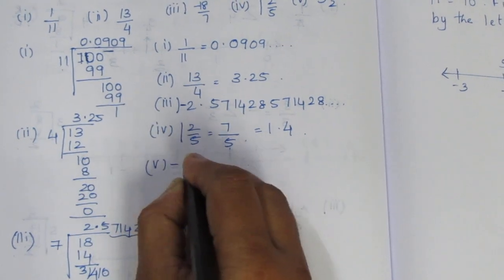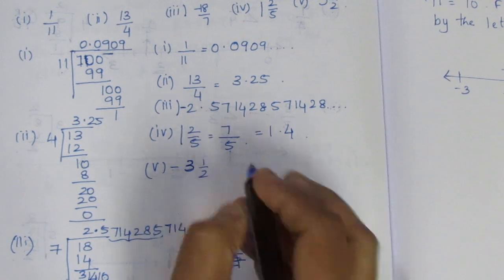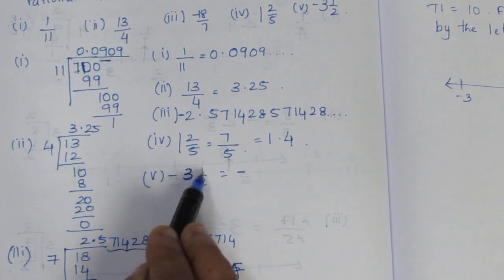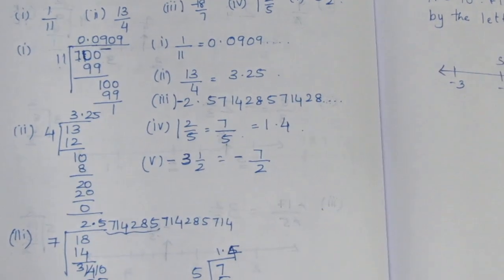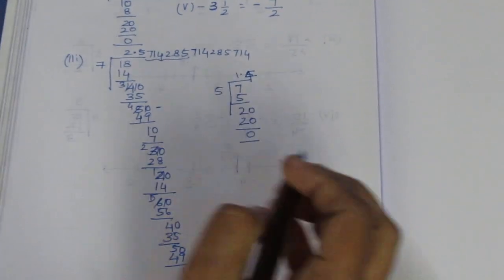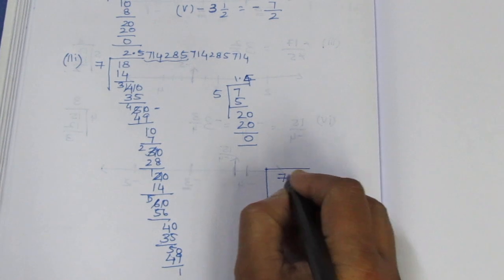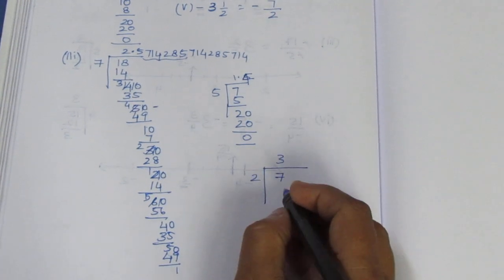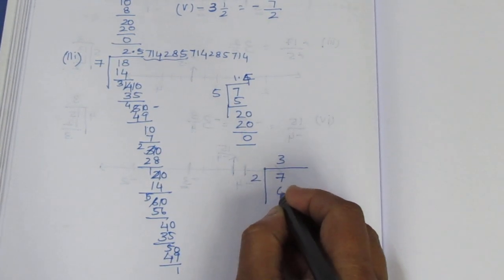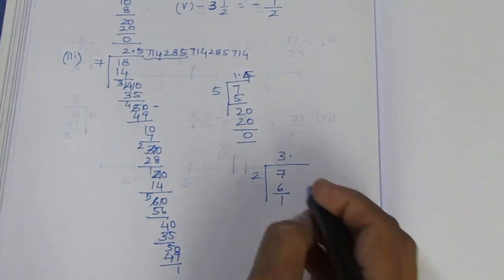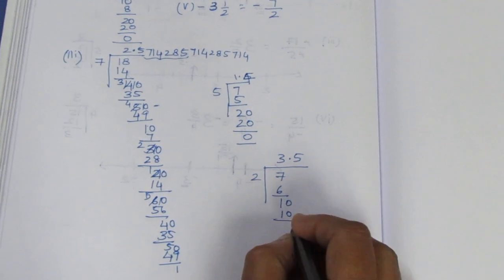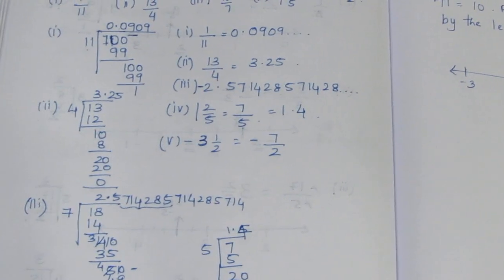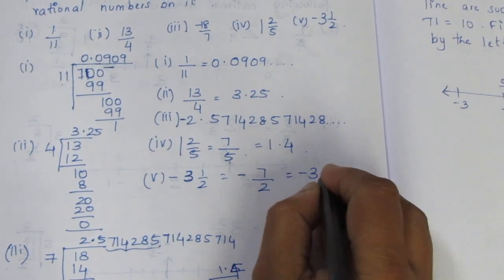Fifth sum: minus 3 and 1 by 2. Convert the mixed number: 3 twos are 6, plus 1 is 7 by 2. Now divide 7 by 2. 2 threes are 6, remainder 1. Decimal point, bring down 0. 2 fives are 10, remainder 0. The answer is 3.5. Since we have a minus sign, minus 3.5 is the answer.